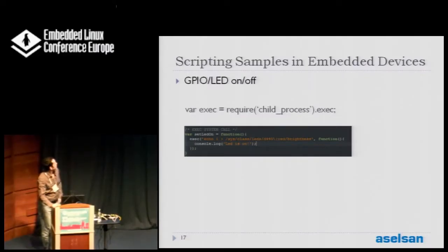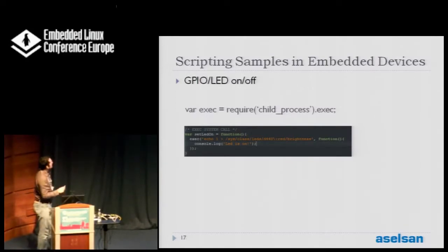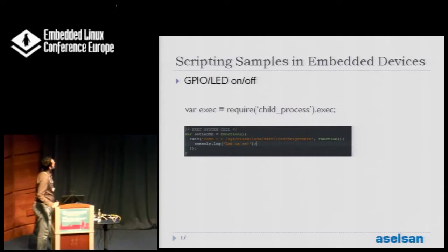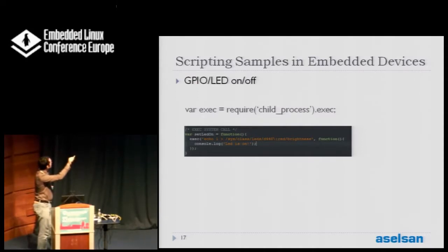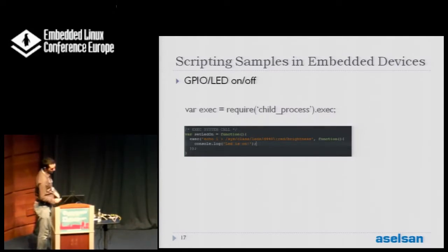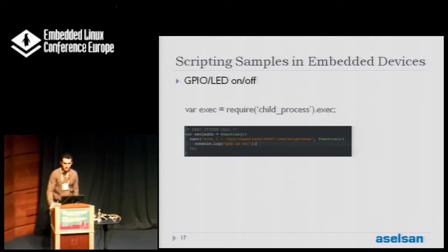Our first sample is an LED on/off function. Here we use the exec function of the child_process module of Node. We have a function setLedOn which sets the LED value to on. We use exec to make a system call to the LED's brightness — we echo one. This is an asynchronous function; when the system call is completed, it goes to the callback function and prints a string to the console. You can also set echo to zero for a setLedOff function. With this, you can write your own watchdog applications, execute any binary, trace their status, and relaunch them if they die.